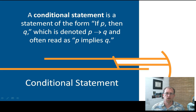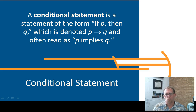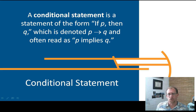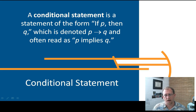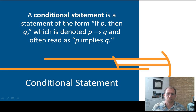Quite often in logical reasoning you're going to have one statement that hinges upon another. In order for this statement to be true, the underlying statement must be true first. And that kind of situation is called a conditional. A conditional statement is a statement in the form if P then Q, which is denoted as P arrow Q and often read as P implies Q or if P then Q.